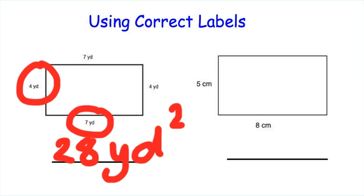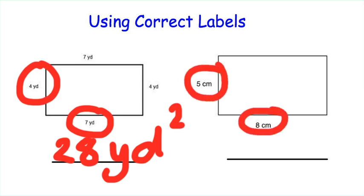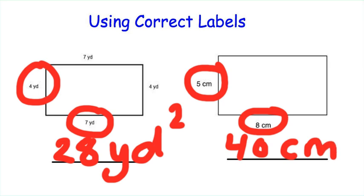For our second rectangle we've got a base of 8 and a height of 5, so 8 times 5 is 40. We have 40 centimeters squared. Notice how we labeled in yards for the first one and centimeters for this one.